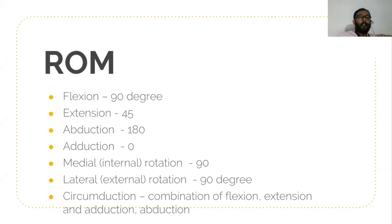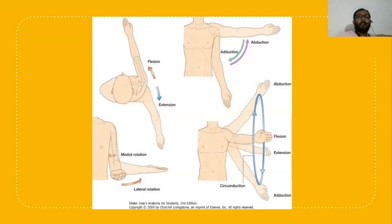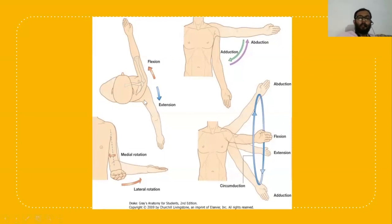The range of motion of the shoulder joint includes flexion, extension, abduction, adduction, internal rotation, external rotation, and circumduction. Compared to other joints, the shoulder joint has more mobility and less stability. The glenoid cavity is 30 degrees inclined to the horizontal plane, so abduction is not on the complete horizontal plane. Flexion is 90 degrees to abduction, so flexion is 30 degrees inclined to the forward plane. The normal range of motion of flexion is 90 degrees.